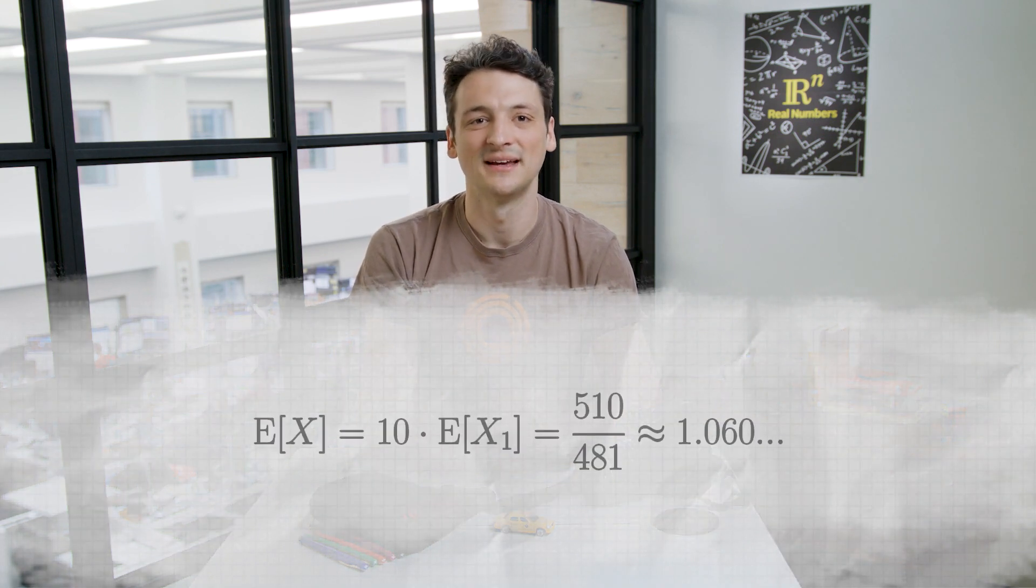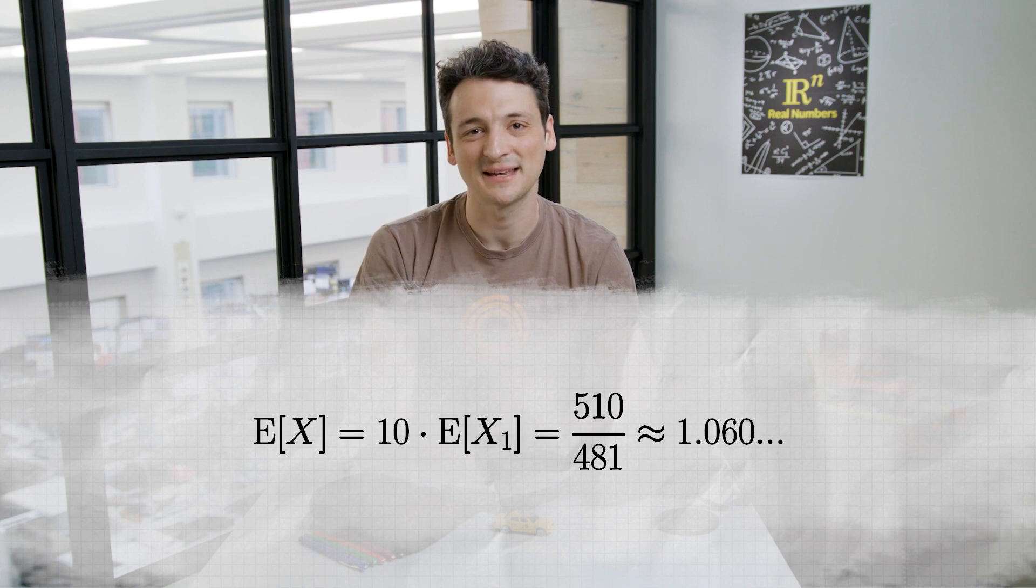Once again, there was nothing special about the first row. Each other indicator variable has the same expected value, and so the expected value of the number of instep rows is again just 10 times this value. The expected value of x equals 10 times the expected value of x sub 1, or 510 over 481, or about 1.06.